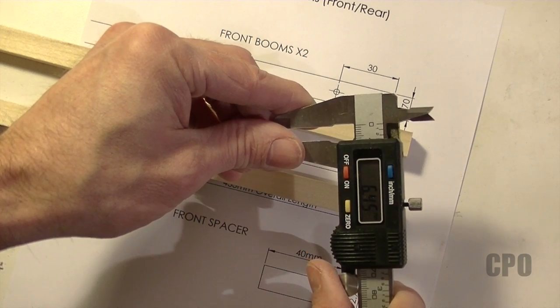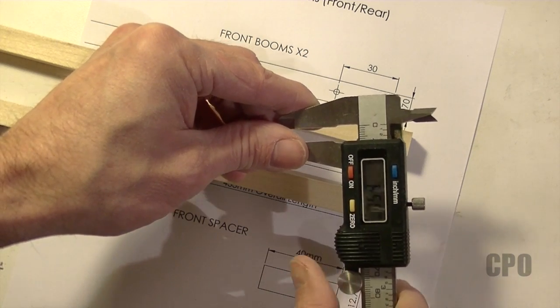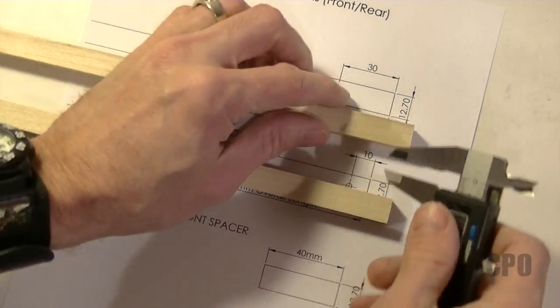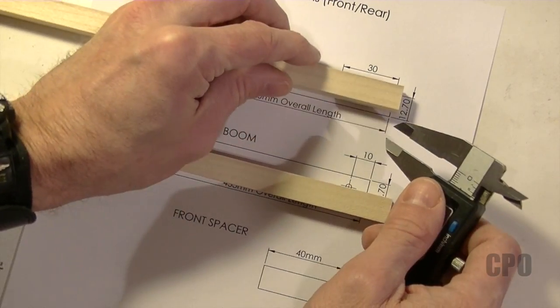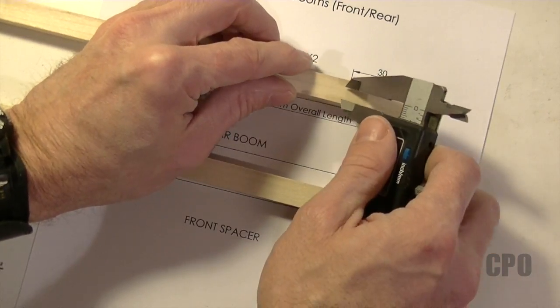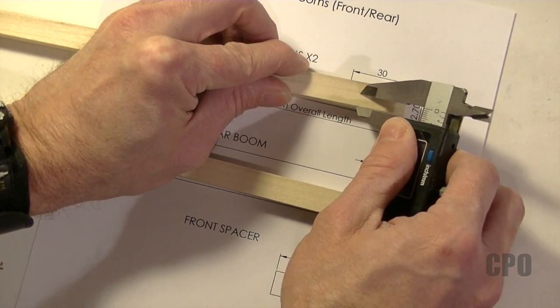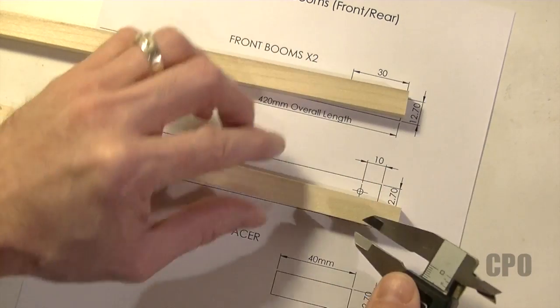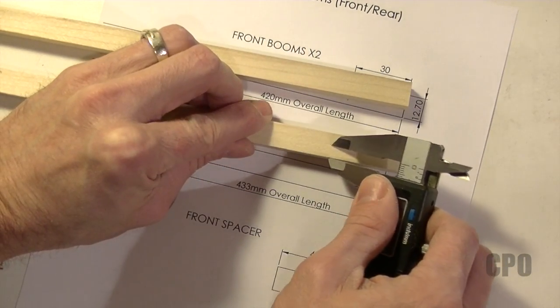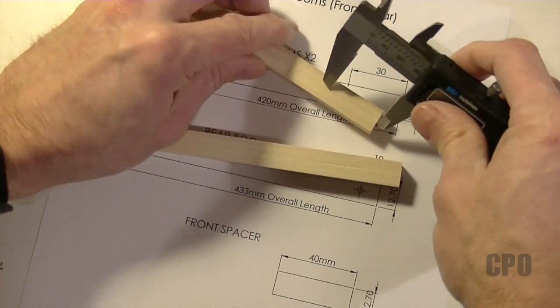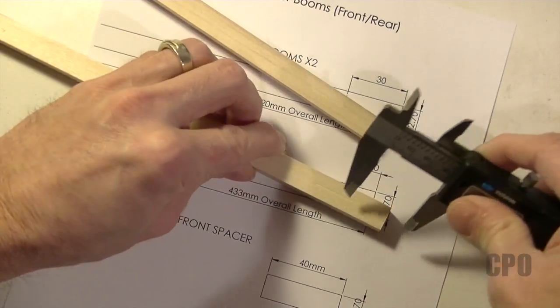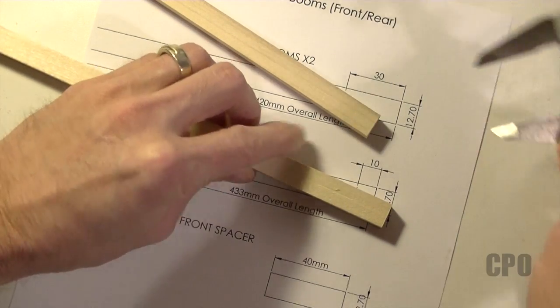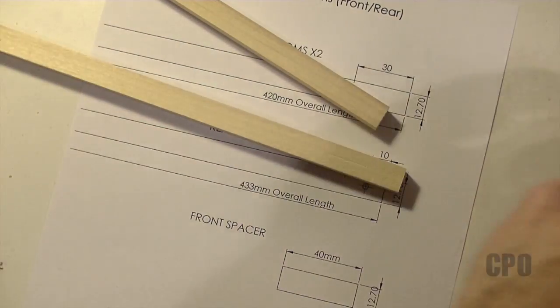In this case I'm going to go with 6.5 millimeters to my center point, and then just scratch a line along the length of the boom in a location that is about 30 millimeters. Then I set the caliper to 30 millimeters and scratch a mark the opposite direction, which gives me that little X where I'm going to drill my hole.